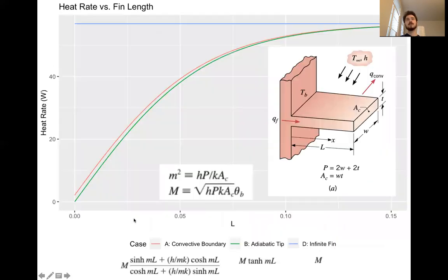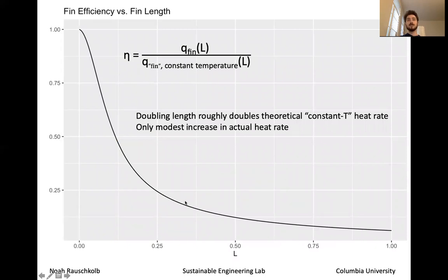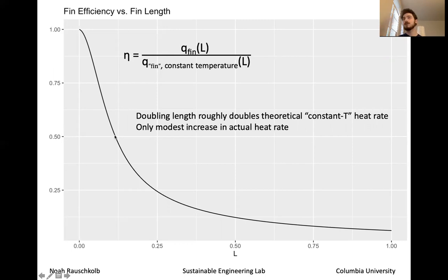Lengthening your fin always does improve your heat rate, but at a certain point there are diminishing returns because you start approaching the infinite FIN limit. It also decreases your efficiency, which is a design metric. I don't know exactly what standards people who design fins use in real life, but I can imagine people don't want to manufacture fins with very low efficiency. If you need to increase your heat rate and your fins are already only 50% efficient, you might try something else rather than just lengthening the fin.